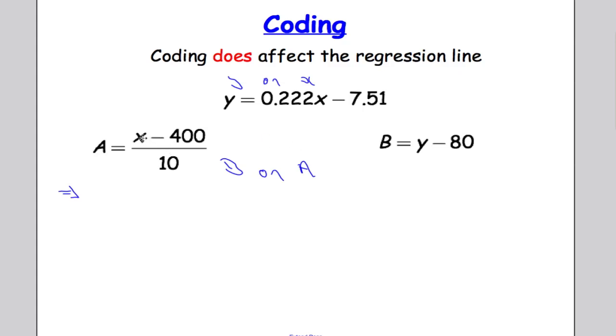If I get x in terms of a so by changing the subject. So 10a will equal x minus 400. That means that x equals 10a plus 400.